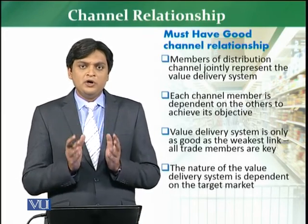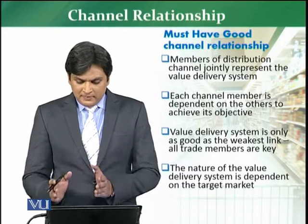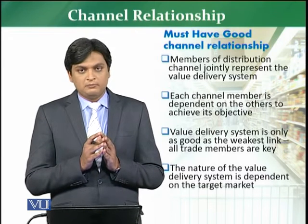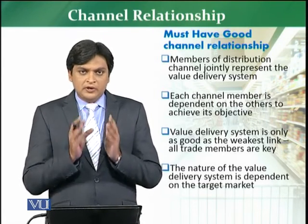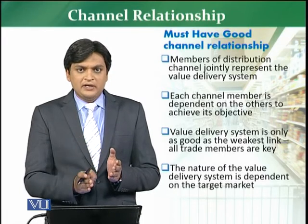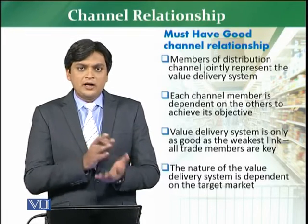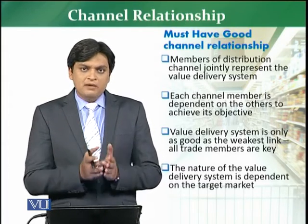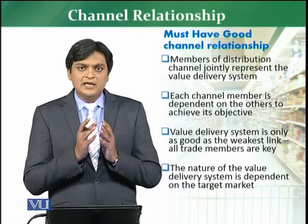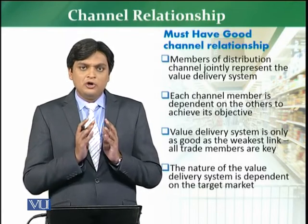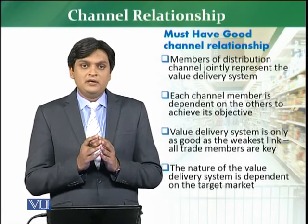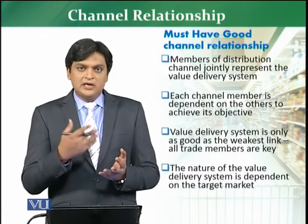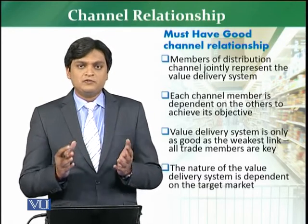Kaun kaun si cheezein hain jo effectiveness in relationship create karti hain? Must-have points for good channel relationship: sabse pehli baat yeh hai ke members of the distribution channel jointly represent karte hain value delivery system ko. If you want to deliver value to your customer, you need to understand ke kisi bhi channel member ka role kam ya zyada nahi hai — so all represent the value delivery network. Tamam logon ka feedback, tamam channel members ka feedback, is very important. Phir each channel member ke objectives dependent hain doosre channel member ke objectives ke upar, aur ultimately customer ke feedback ke upar aapke objectives fulfill hote hain.